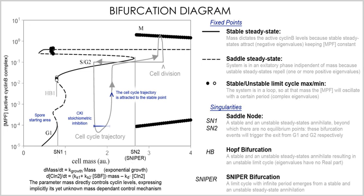A model of a biological system is converted into a system of equations, although the word 'model' is often used synonymously with the system of corresponding equations. The solution of the equations, by either analytical or numerical means, describes how the biological system behaves either over time or at equilibrium. There are many different types of equations and the type of behavior that can occur is dependent on both the model and the equations used. The model often makes assumptions about the system, and the equations may also make assumptions about the nature of what may occur.